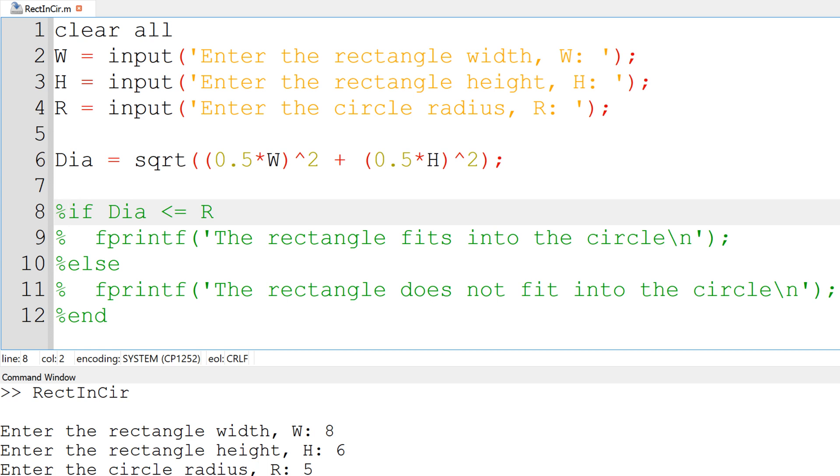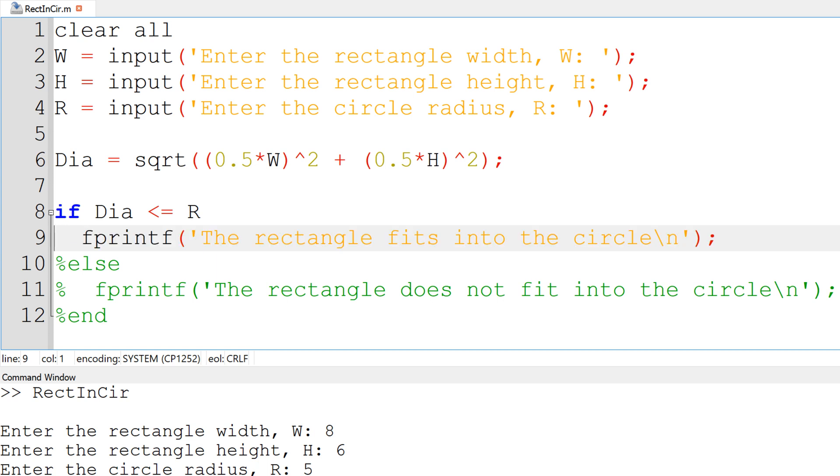We can start with if followed by DIA less than or equal to R and I would display 'the rectangle fits into the circle' since the size of rectangle is small enough to fit into the circle.